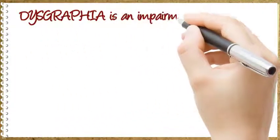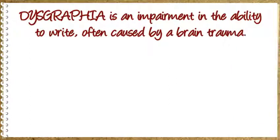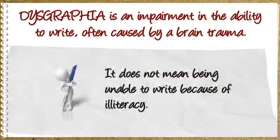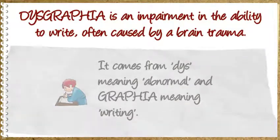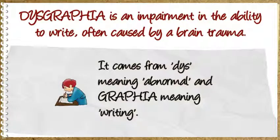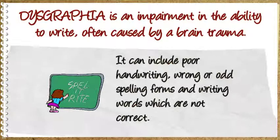Dysgraphia is an impairment in the ability to write, often caused by brain trauma. It does not mean being unable to write because of illiteracy. It comes from dys meaning abnormal and graphia meaning writing. It can include poor handwriting, wrong or odd spelling forms, and writing words which are not correct.